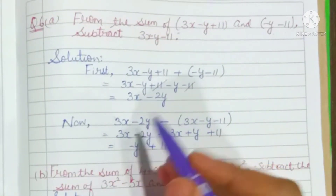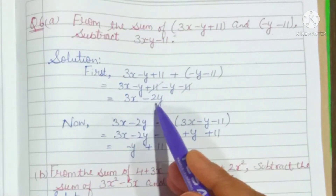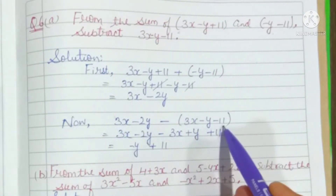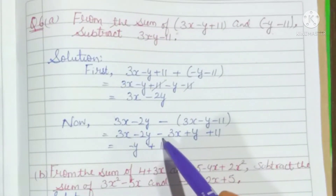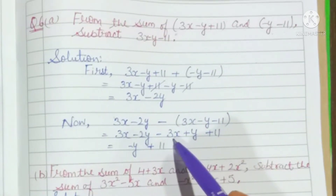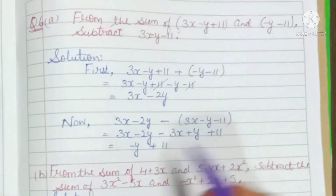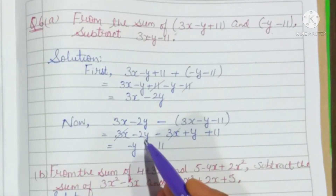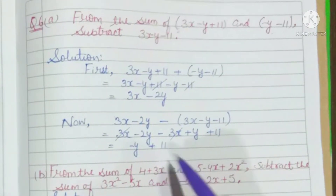Now we will subtract (3x minus y minus 11) from the sum 3x minus 2y. So: 3x minus 2y minus (3x minus y minus 11). Open the bracket — because of the minus sign, change the sign of all terms: minus 3x, minus y becomes plus y, minus 11 becomes plus 11. So 3x minus 3x cancel; minus 2y plus y gives minus y; and plus 11 remains. Same approach for part (b).